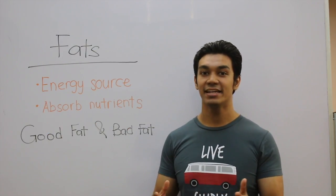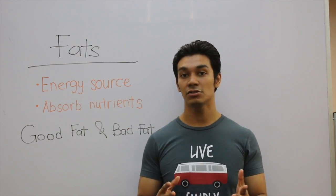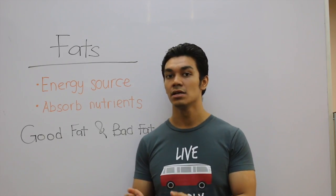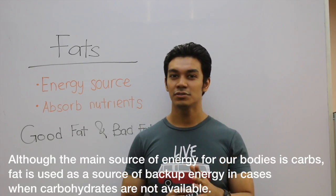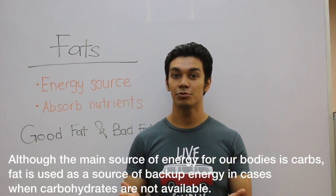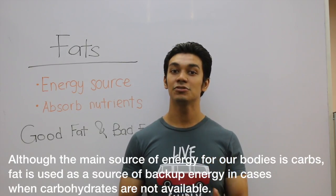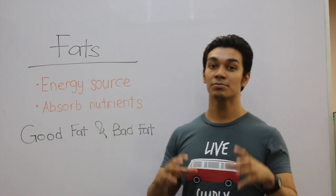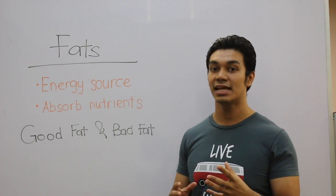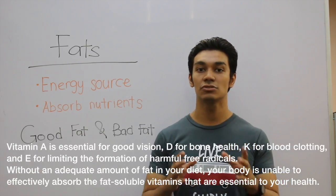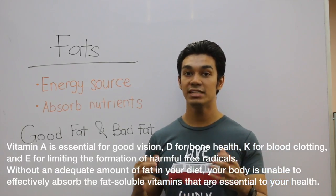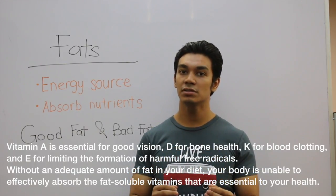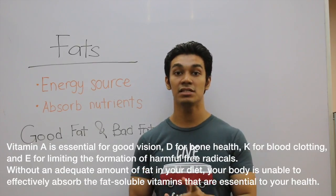The next macro we're going to talk about is fat. Fat is a great energy source and it's very dense in calories — 1 gram of fat is 9 calories. Our body will always prefer to utilize carbs and proteins before it actually uses fat as energy. The second role of fat is that it absorbs nutrients. Certain nutrients like vitamins A, D, E and K are fat-soluble nutrients, so they need fat in our body to actually absorb and utilize them. This is very important for overall health and especially in fat loss.